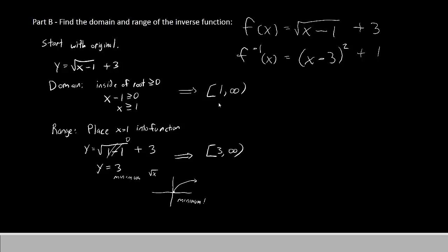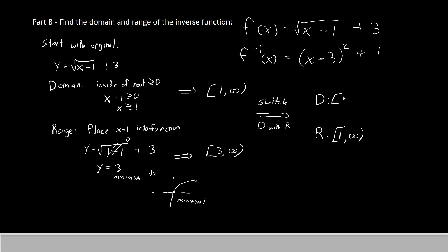That tells us the domain and range of the original function. To find the domain and range of the inverse, all we do is switch them. So the range of the inverse function is 1 to infinity, and the domain of the inverse function is 3 to infinity. The domain and range of the inverse are just the opposite of those in the original function.